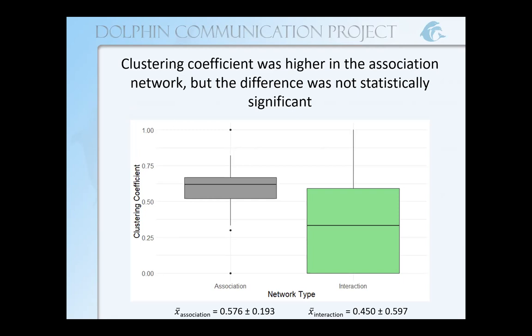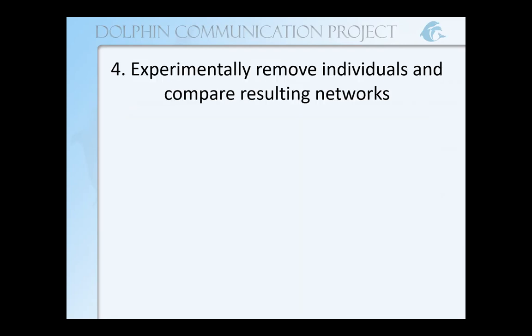Another thing we can do with SNA is to experimentally remove individuals and compare the resulting networks. The reason we might want to do this is if we're investigating a social group that is at risk from human impacts, climate change, or a disease — we can see what might happen to the social network if we were to remove important individuals or randomly remove individuals. We could also look at populations of an endangered species if we wanted to remove an individual to bring them into captivity to mate and increase the population, specifically targeting individuals that are going to have a lower impact on the resulting network.